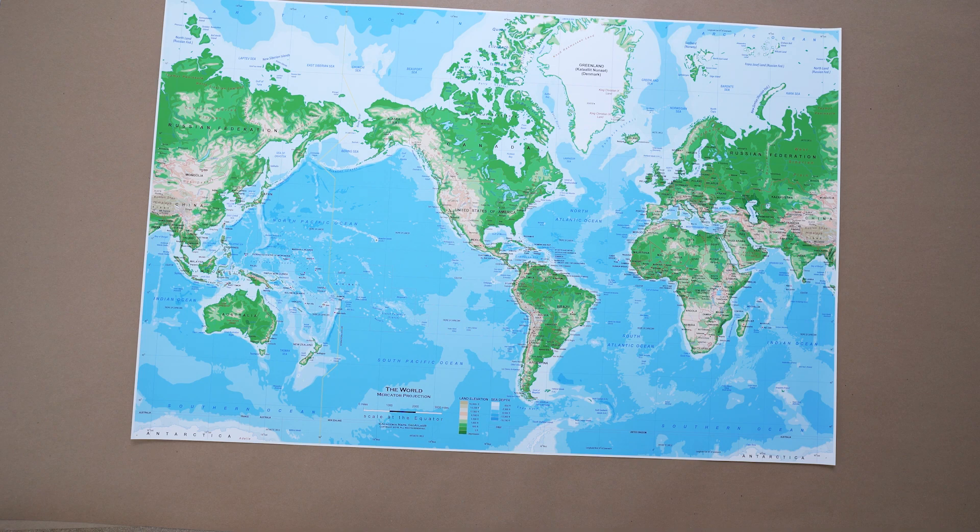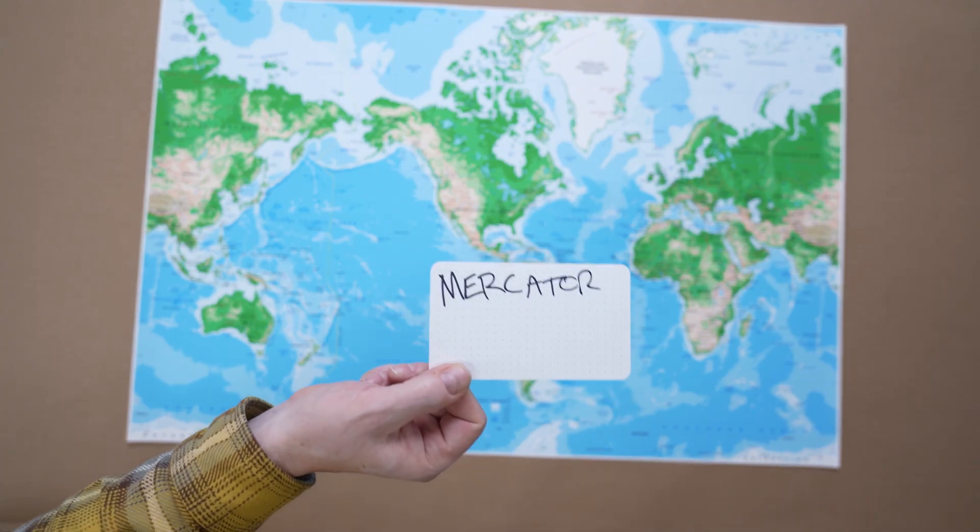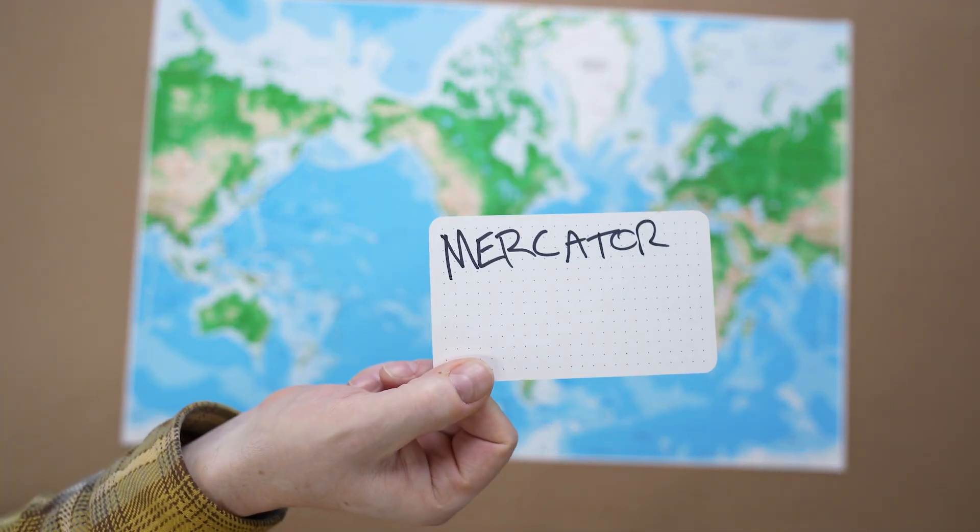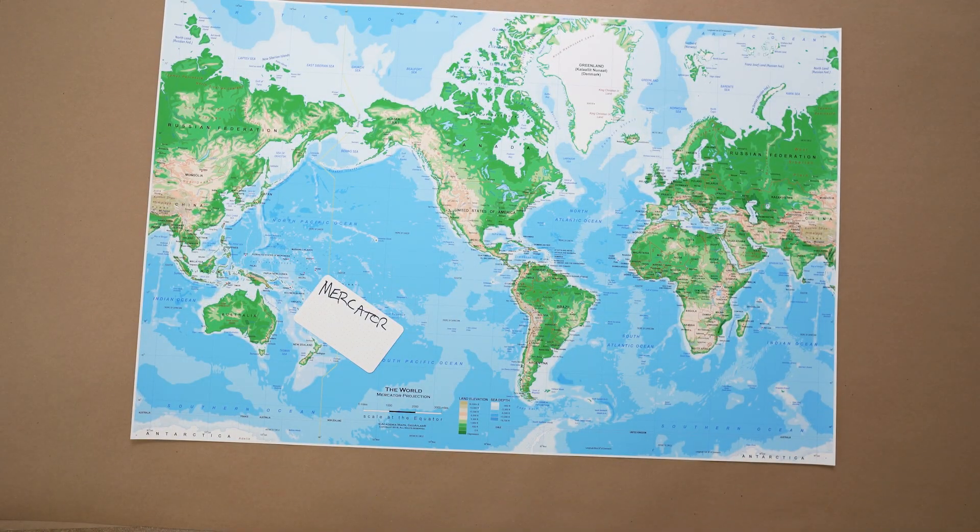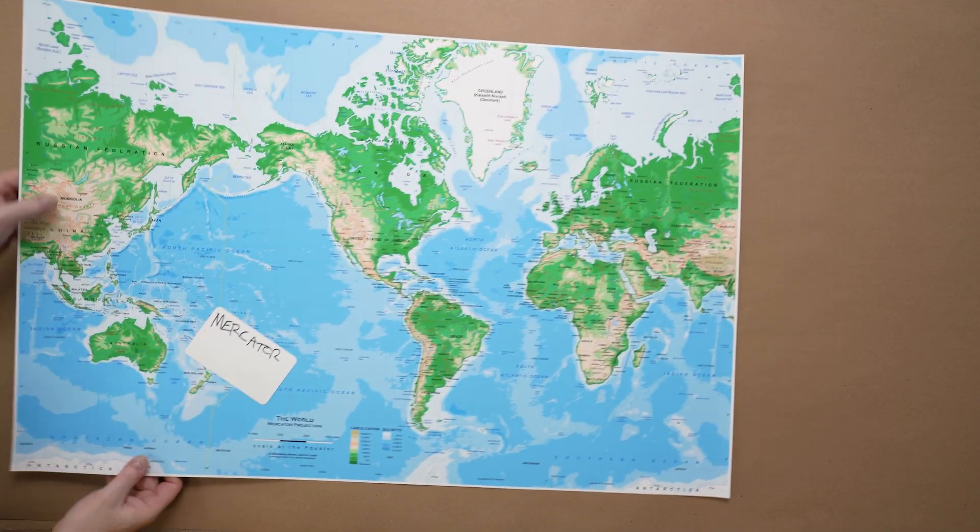Let's start with what we think we know. This is the Mercator projection. Probably the most common world map of all time. And on this map, certain things look off, but you might not have noticed because at this point, this is just what a world map looks like to many of us.